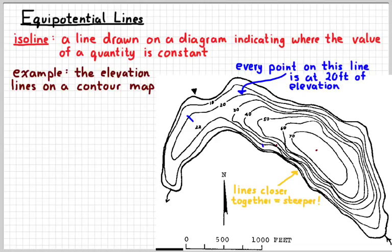Where the lines are close together, that represents a steep slope. So if you were to try to climb this hill along a path in this area, it would probably be really steep. Whereas if you went this direction instead, it would probably be a much gentler slope, easier to climb. So if you can understand a contour map, then you can understand an equipotential map.